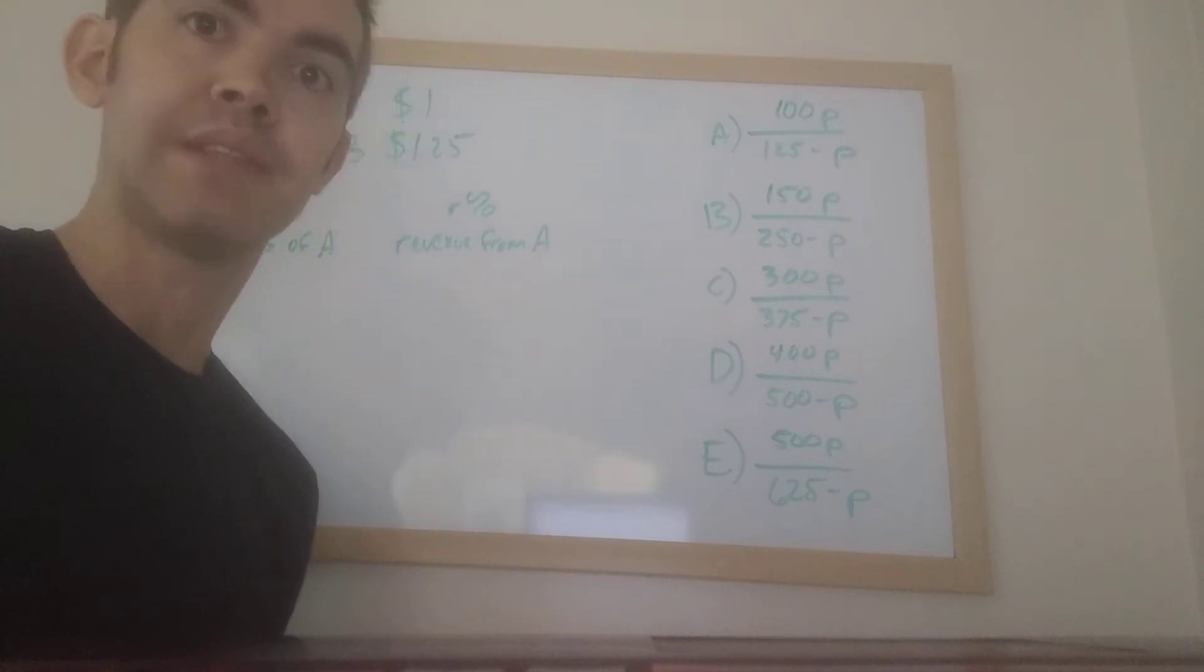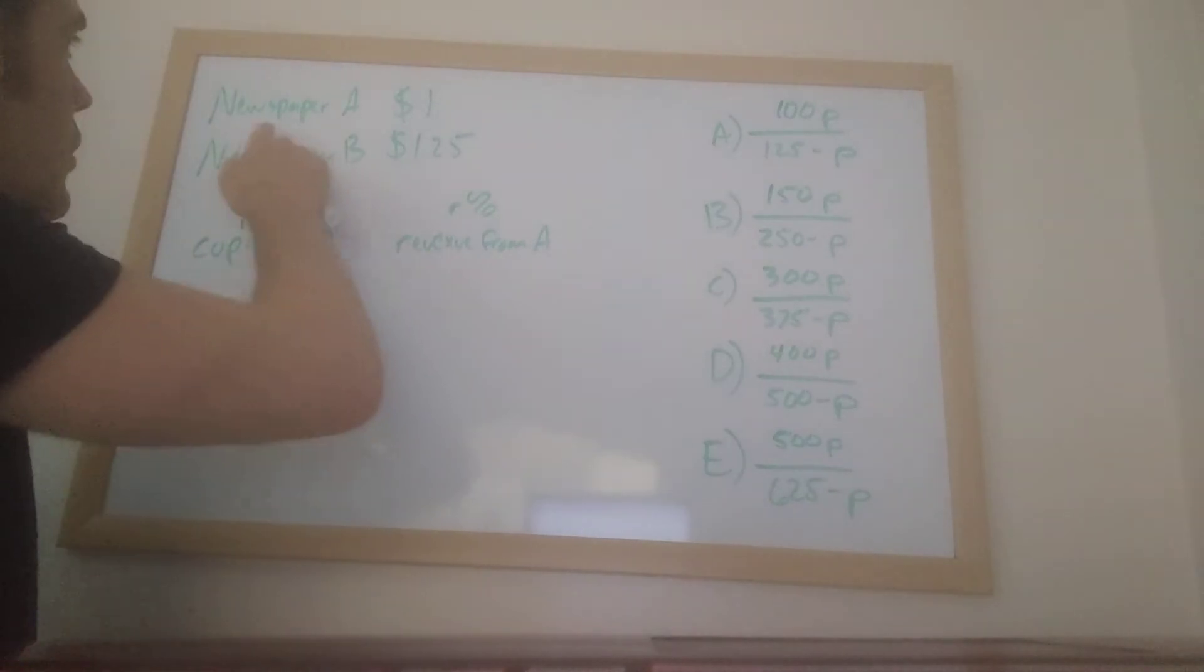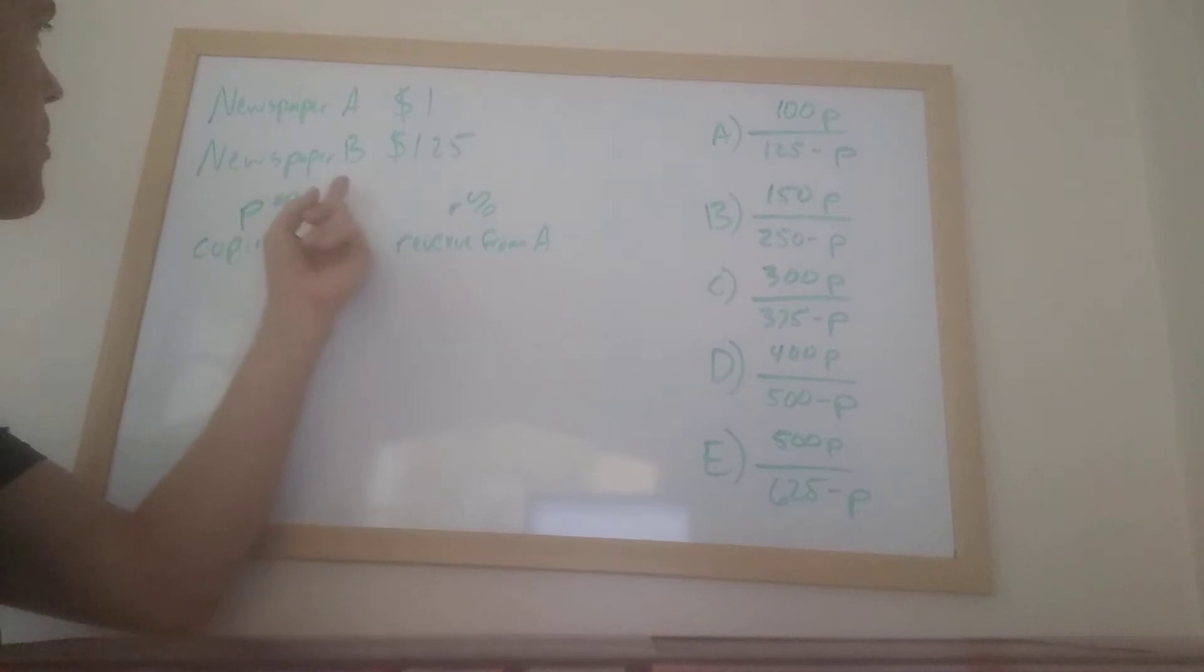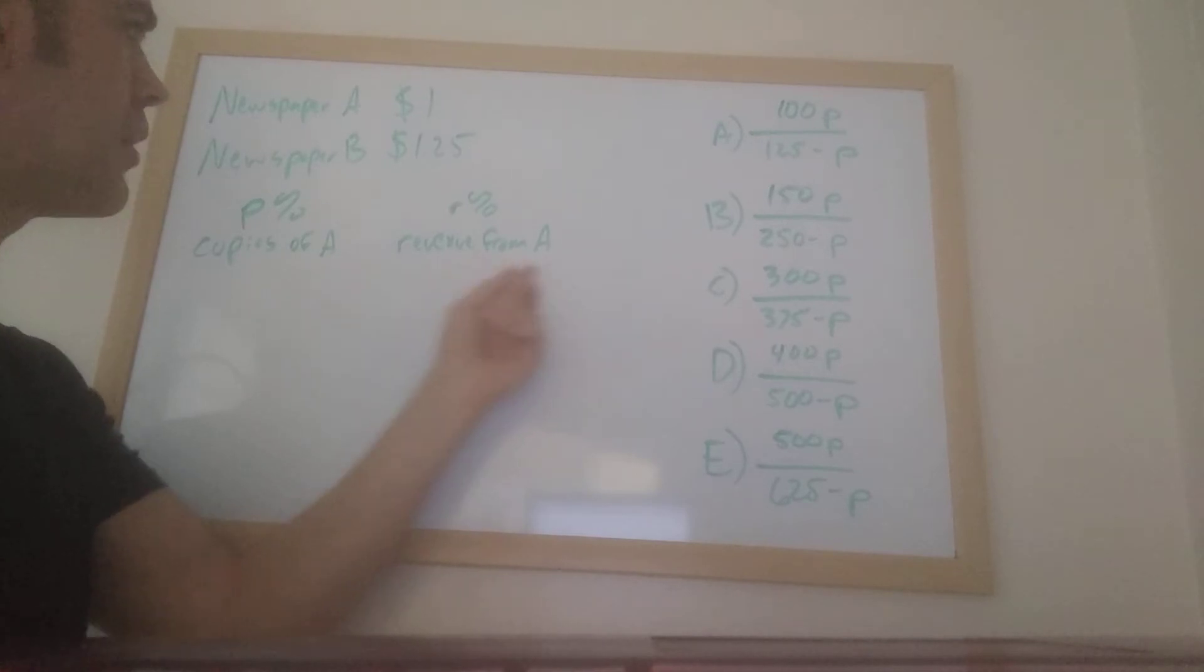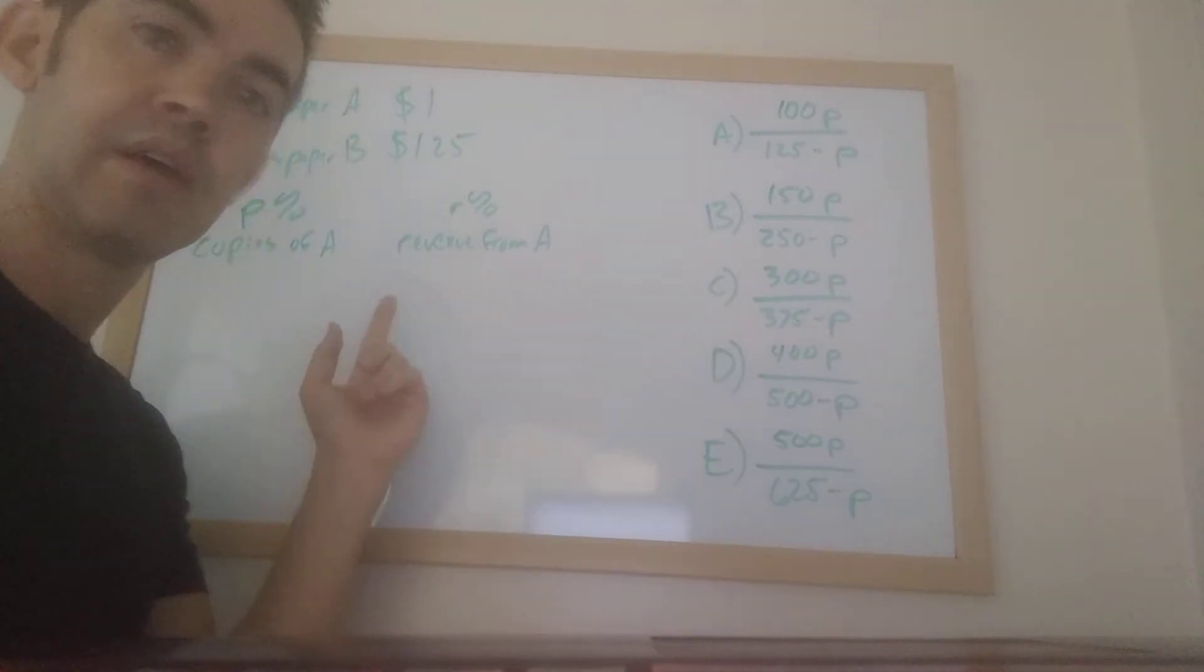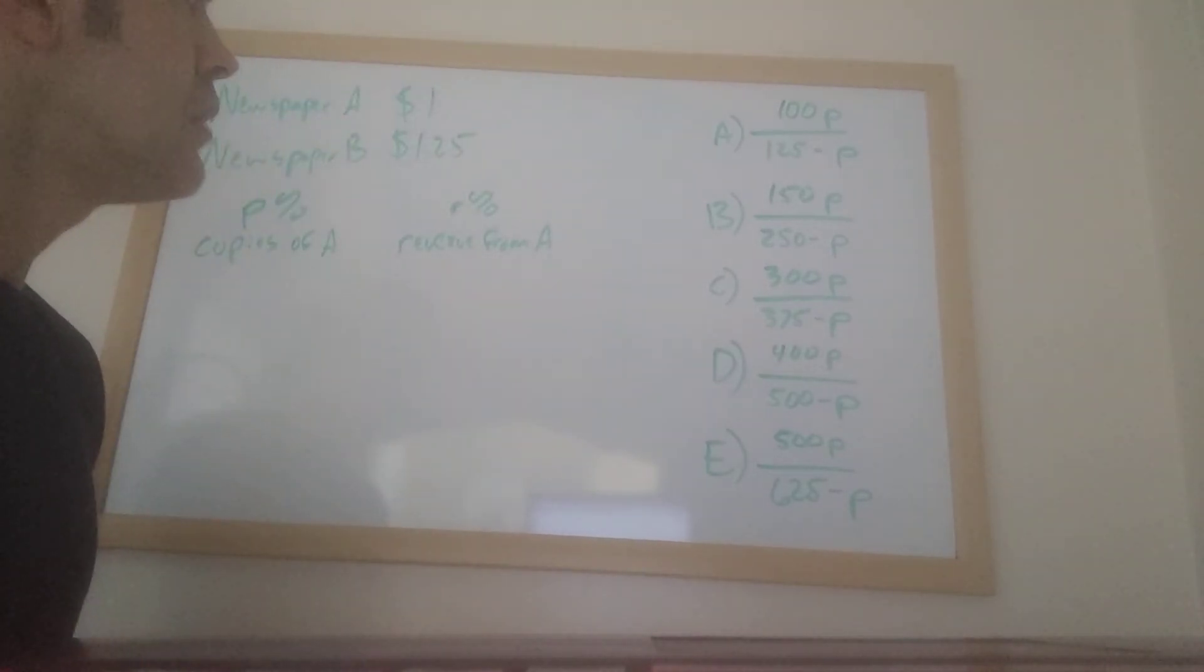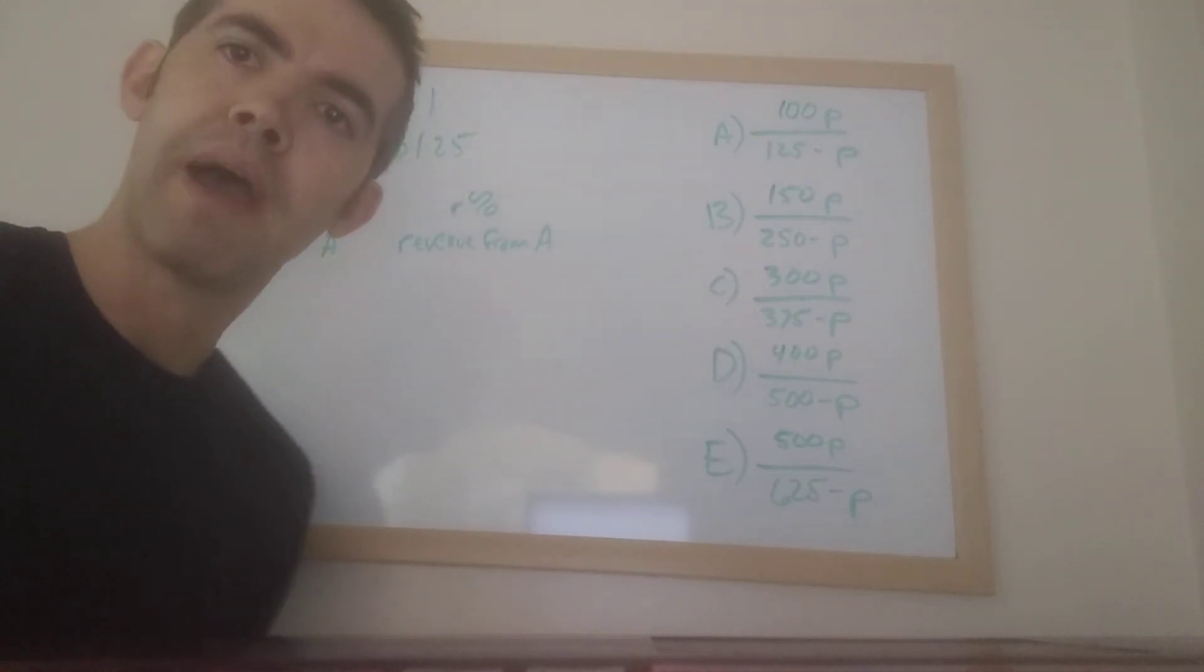This problem, though, the algebra is not easy. So basically, here's what's going on in the problem. There's a newsstand selling copies of Newspaper A for a dollar each and Newspaper B for $1.25 each. They tell us that R% of the revenue comes from Newspaper A, and P% of the copies of newspapers sold are copies of A. They don't tell us that in this order, which is a little bit more confusing. Anyway, rather than do the algebra on this, which is pretty brutal, and if you look in the back of the official guide, they essentially take like an entire page to solve it with algebra, which is always a bad sign.